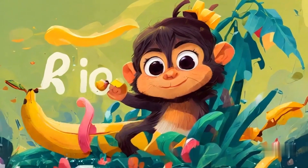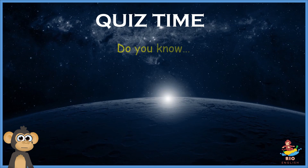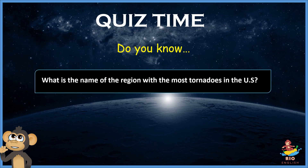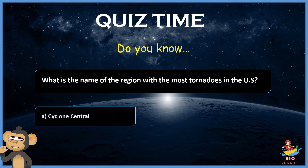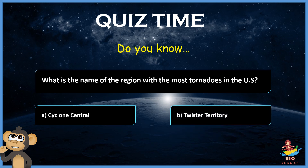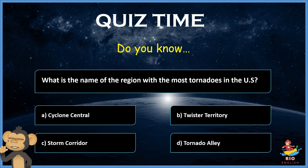Real English. Do you know? What is the name of the region with the most tornadoes in the US? A. Cyclone Central. B. Twister Territory. C. Storm Corridor. D. Tornado Alley. Please leave your answer below.